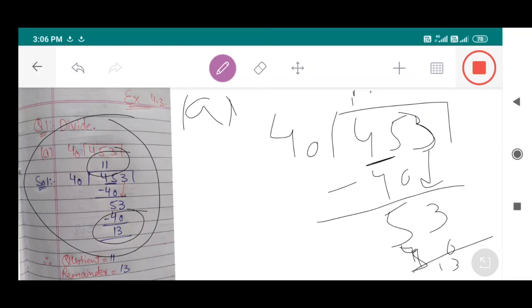453 is the dividend, 40 is the divisor, 11 is called the quotient, and 13 is called the remainder.